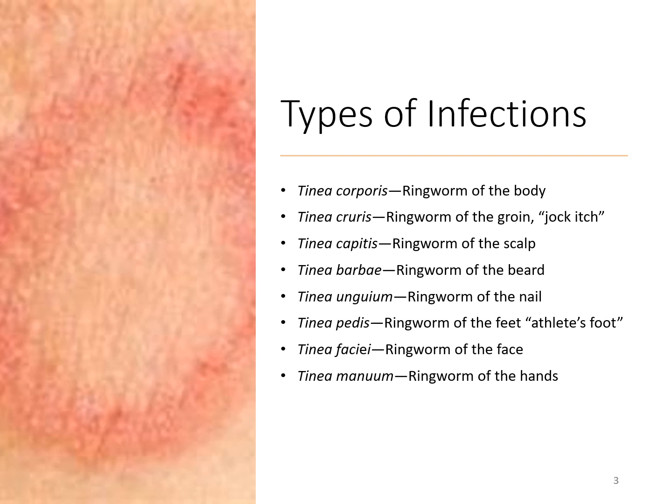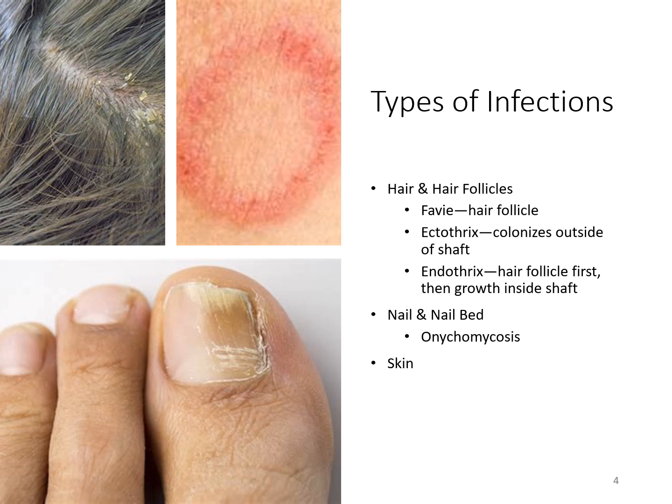With infections of the hair and hair follicles, it can involve the hair follicle itself. It can be the ectothrix, or the outside of the shaft, or it can be the endothrix, the inside of the hair follicle — inside the hair shaft — and it starts at the follicle. You can see an image in the upper left-hand corner where the infection has actually crusted around the hair.